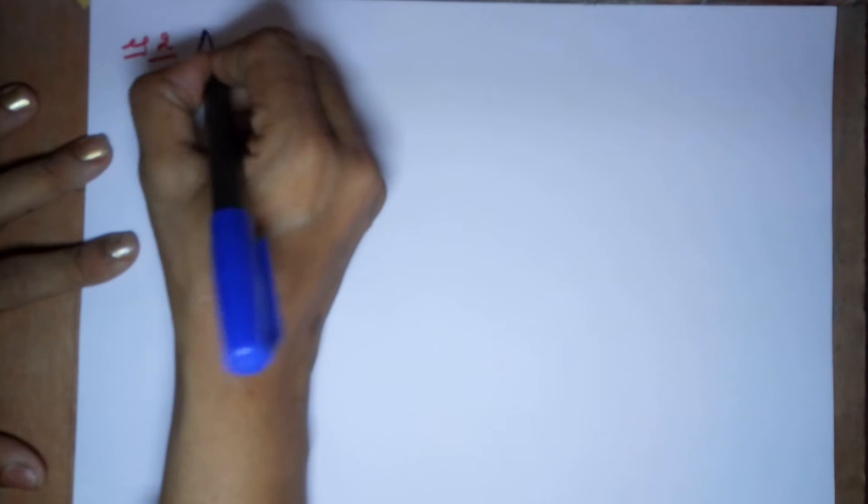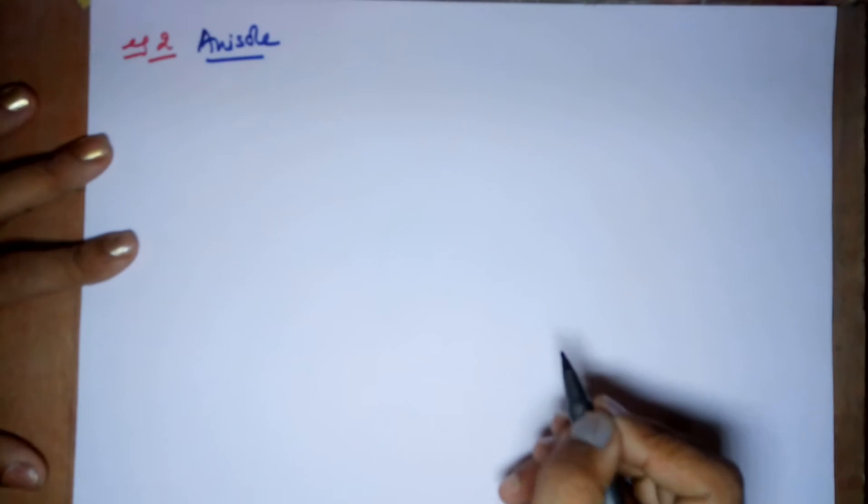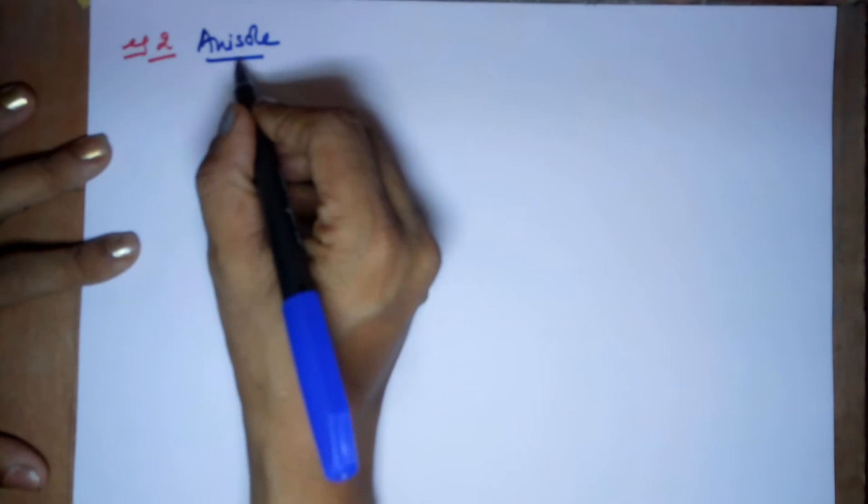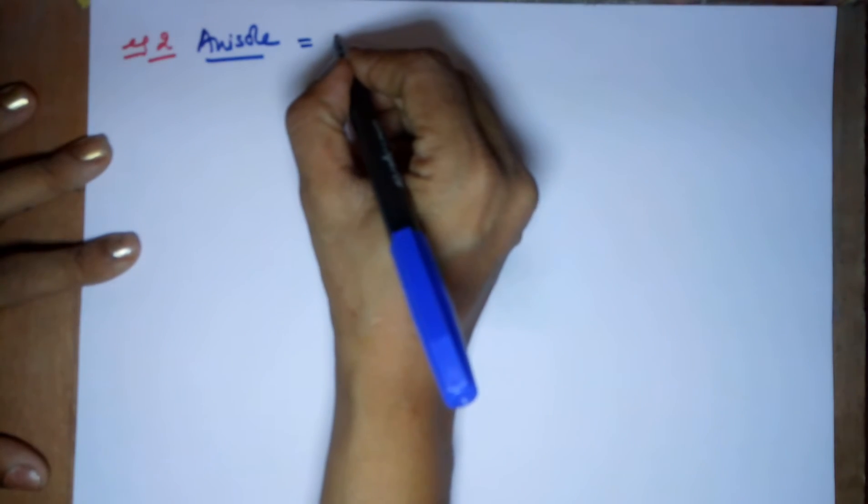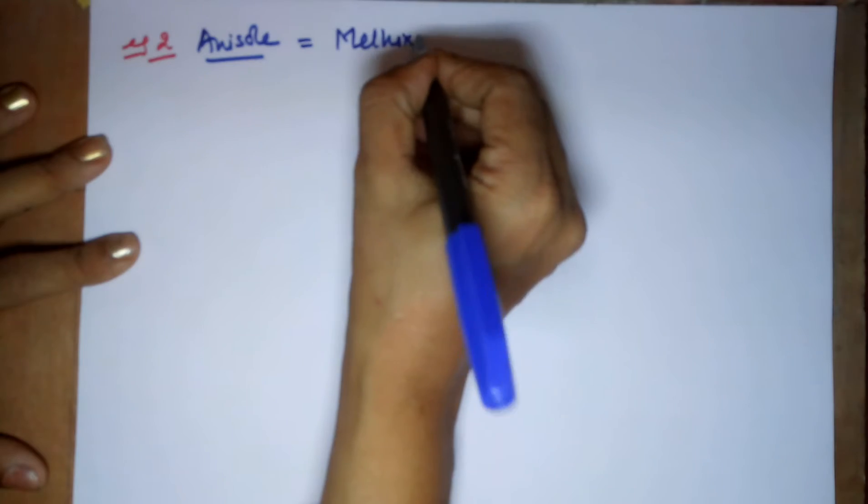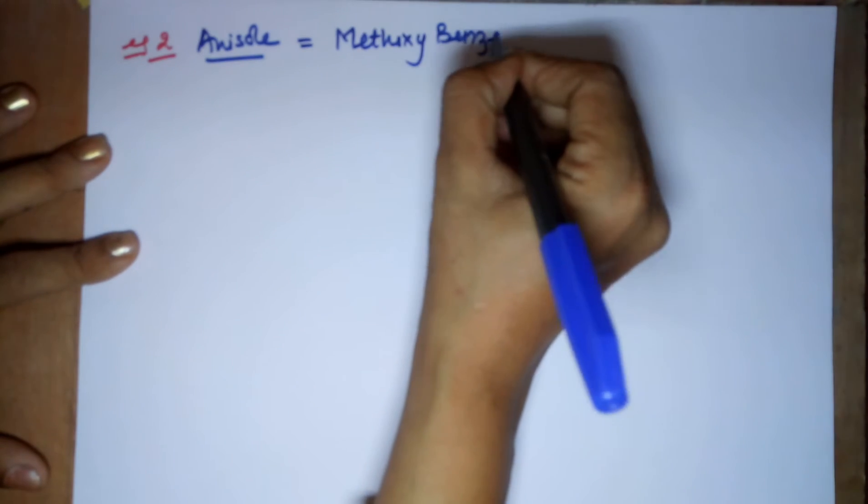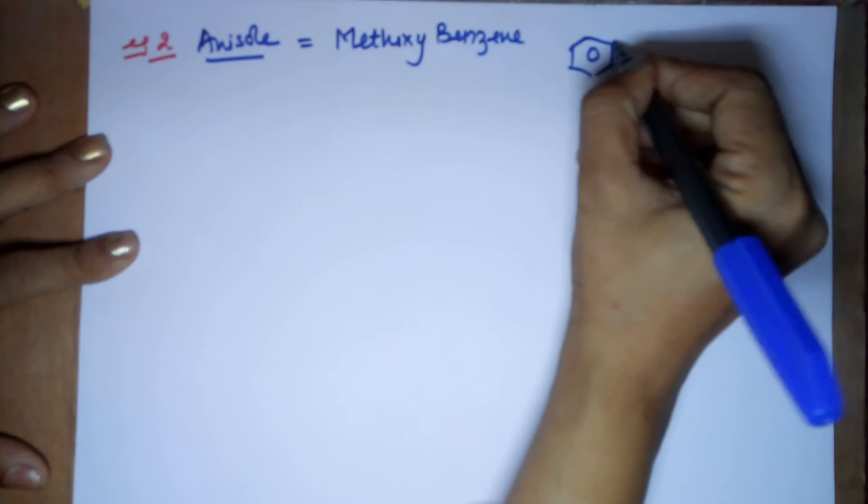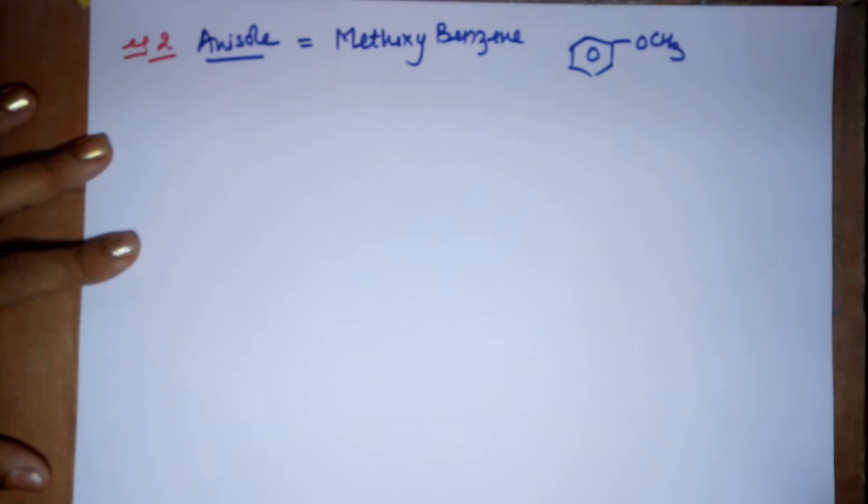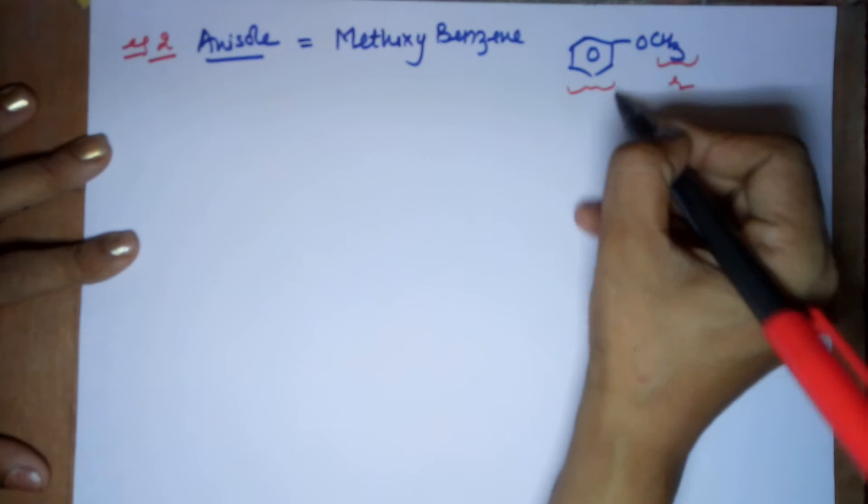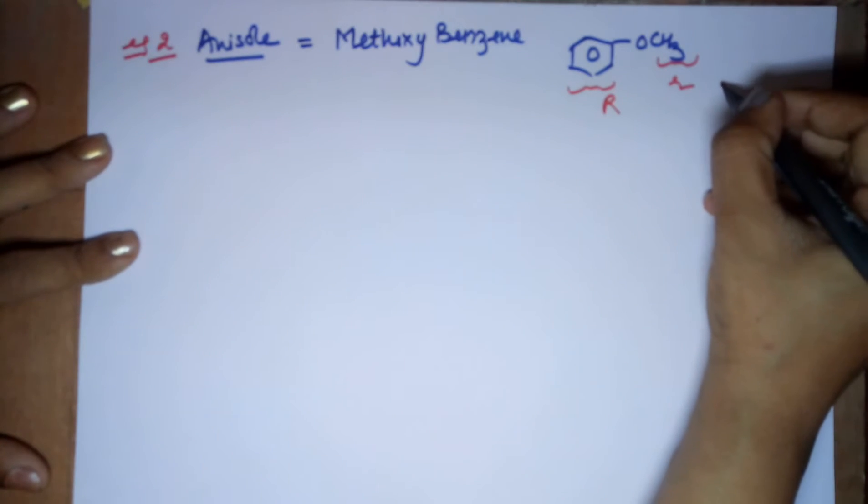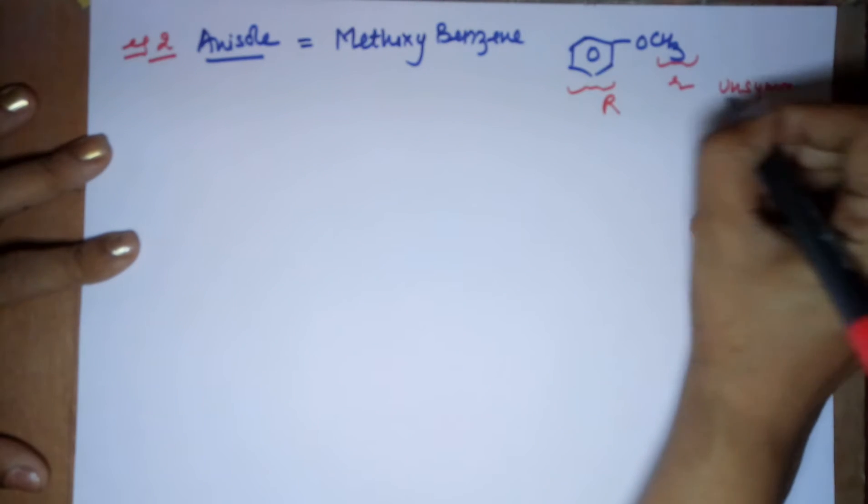Coming to the second example where I am going to prepare anisole. This is a commonly asked question in the examination to prepare anisole by using Williamson's synthesis. Now for anisole, you first need to know what is anisole. Anisole is methoxybenzene. So the structure becomes, in which case your R groups are, one is this, the other is this. Hence, they are different. So it is again an unsymmetrical ether.